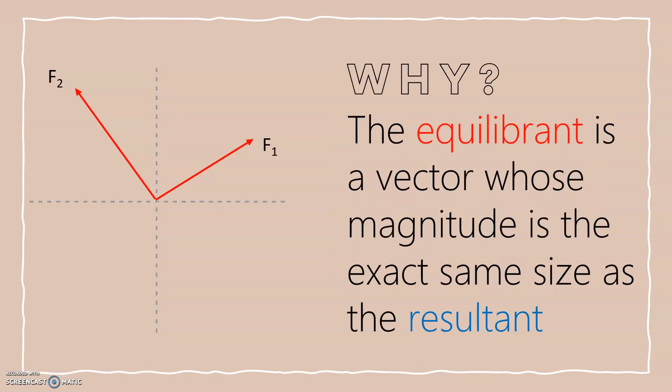Now you may be asking, why do we need to find the resultant? Well, the equilibrium is a vector whose magnitude is the exact same size as the resultant. So the magnitude of both the equilibrium and the resultant are the exact same size.